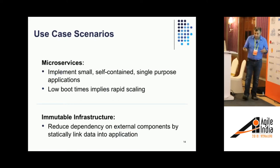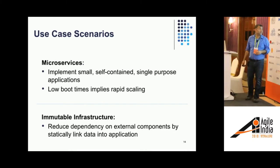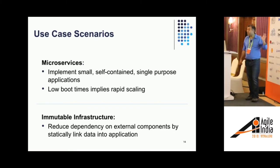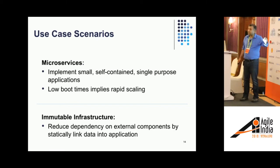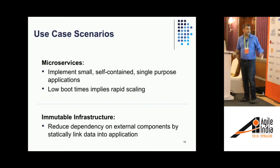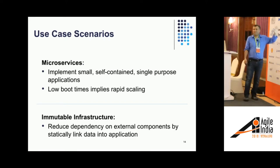Use case scenarios: microservices is really popular these days, and unikernels are quite a good way to implement microservices because they are small, independent, and follow the single responsibility principle. They have low boot times, which means rapid scaling — you need that elasticity when you operate at scale. Another potential application is immutable infrastructure: reduce your dependency on external components by taking everything and preparing it as one image, statically linking the data.